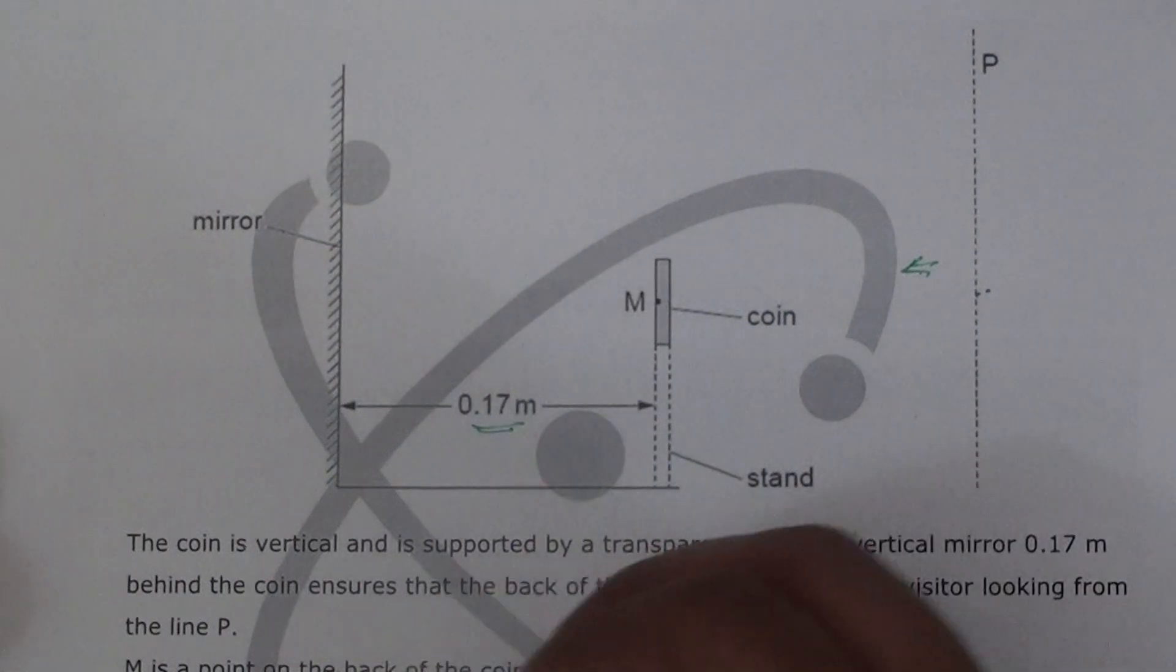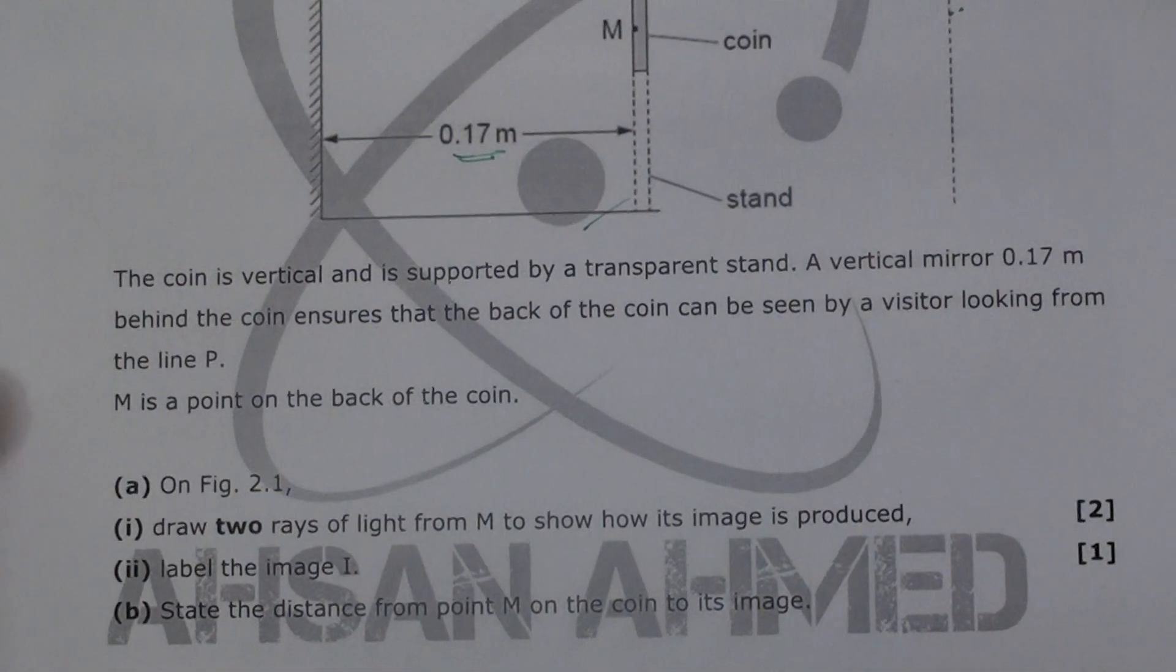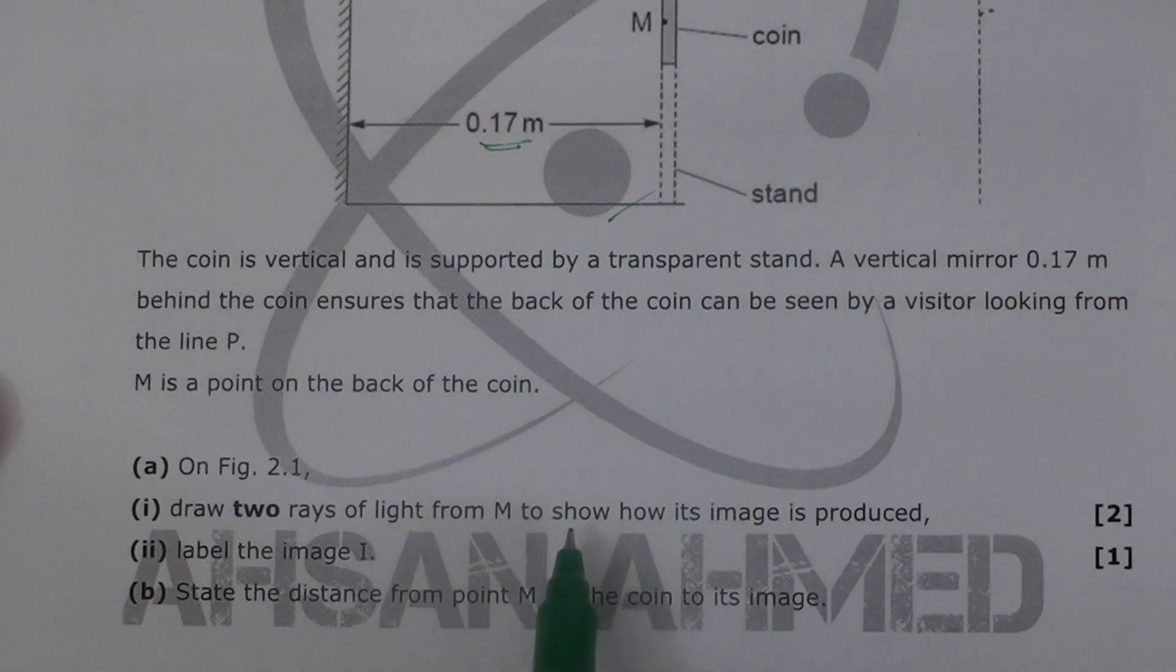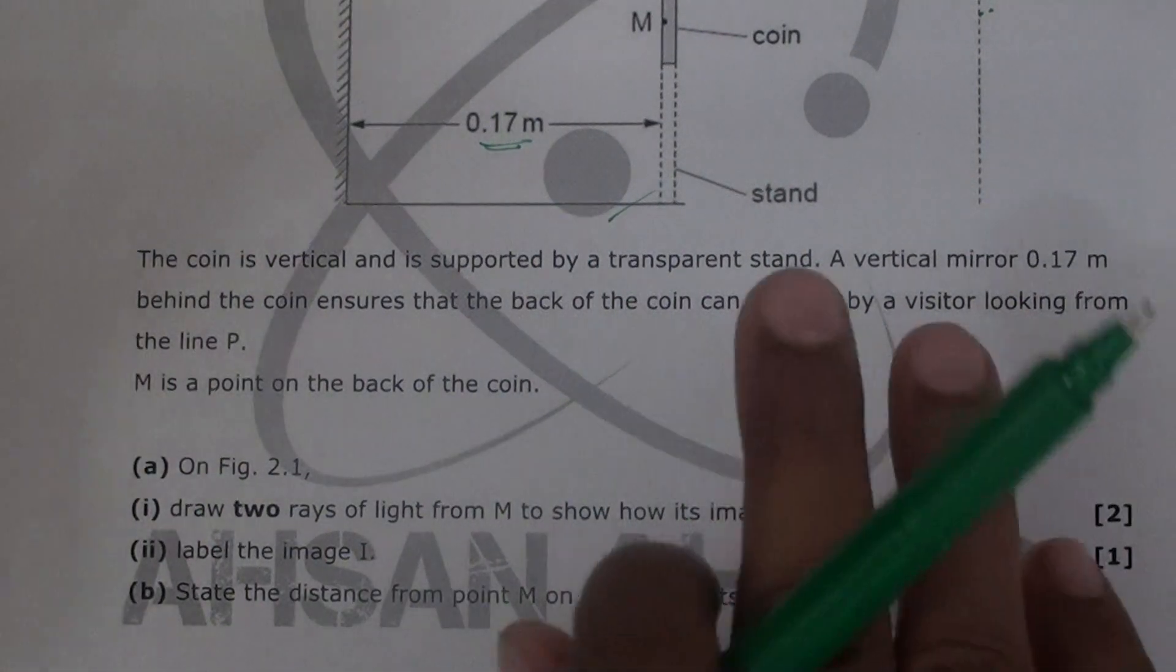Now the question is, on figure 2.1, draw—I'm going to show you the question first so you know exactly what it asks word-to-word. Draw two rays of light from M to show how its image is produced.